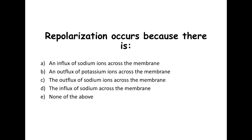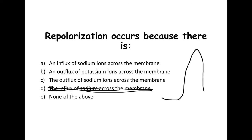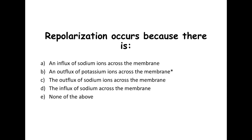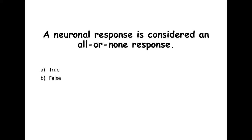Repolarization occurs because of which of the following: an influx of sodium, an outflux of potassium, or an outflux of sodium? Remember, repolarization is when we come back down after the action has occurred. If you said an outflux of potassium ions across the membrane, you are correct.